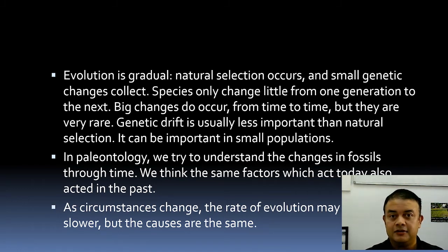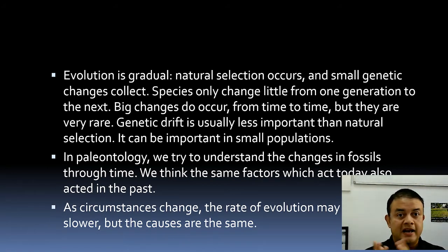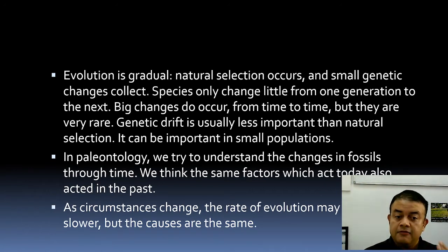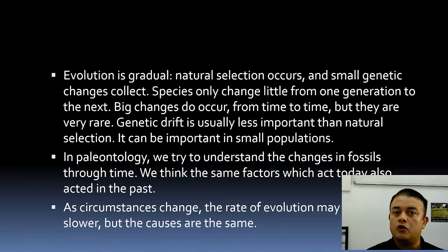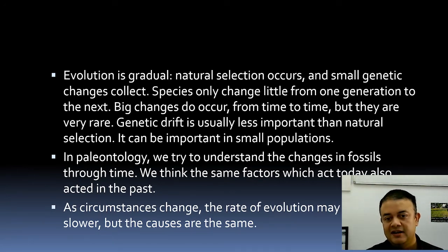A classic example of a bottleneck is an asteroid impact, when the whole population is constrained to very few individuals — drift plays a large role then. In paleontology we try to understand changes in the fossil record through time, dealing with macro-evolution over vast geologic time. We think the same factors acting today also acted in the past — similar to the molecular clock hypothesis, where sequences change at a roughly constant rate, allowing us to calculate divergence times.